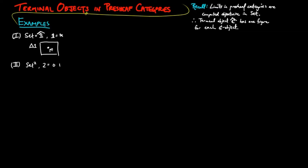In set squared, the terminal object is the container with a point in each of the two compartments.